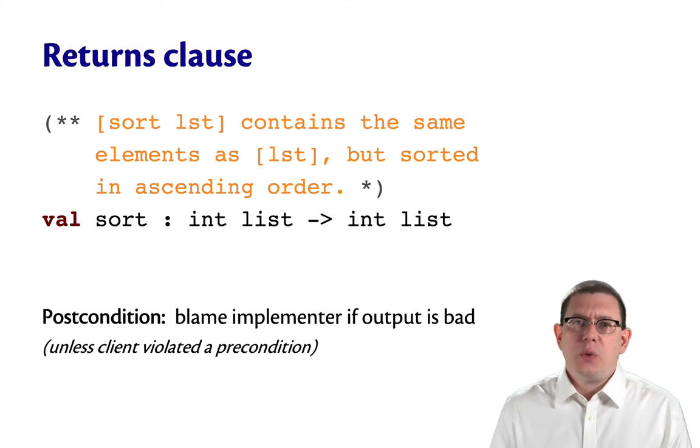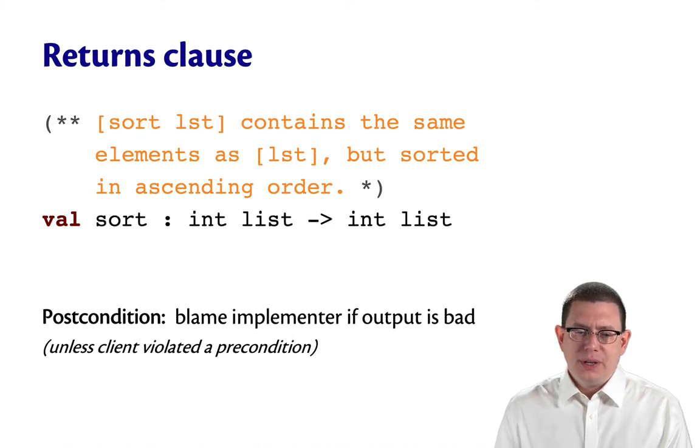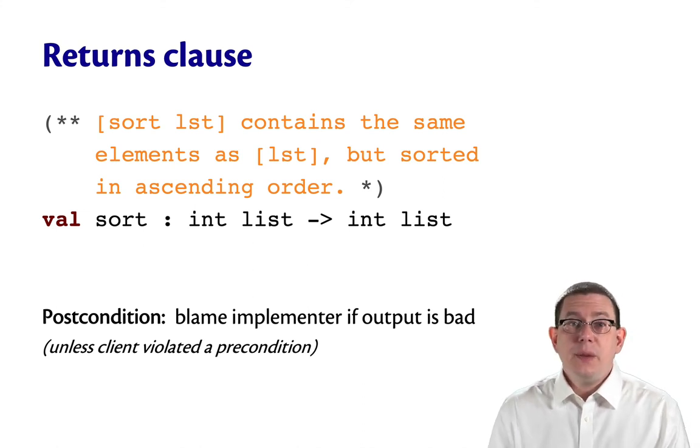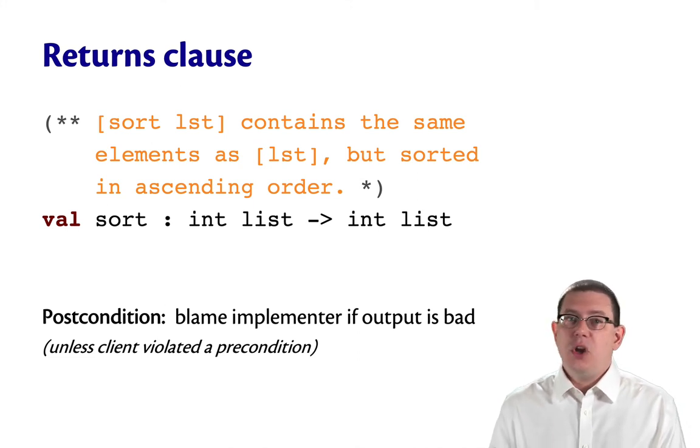But as we saw with list.sort, there are other ways of approaching this as well. Here's a hypothetical specification for a sort function that is for int lists. SortList contains the same elements as list but sorted in ascending order. So this is stating a postcondition. It's telling us who to blame, in this case the implementer, if the output is bad. So if this function returned a list that was not sorted, that would be the implementer's fault.